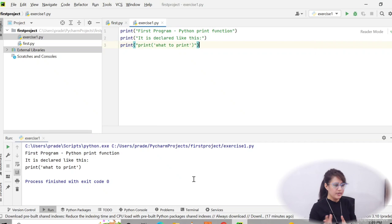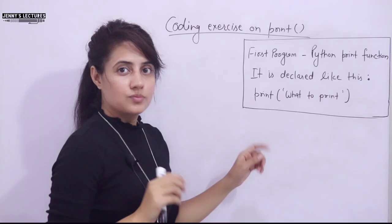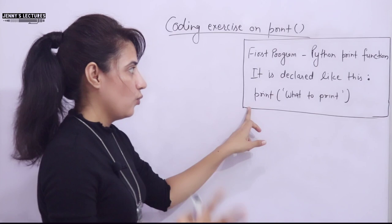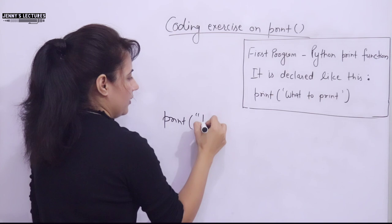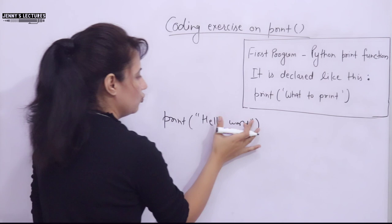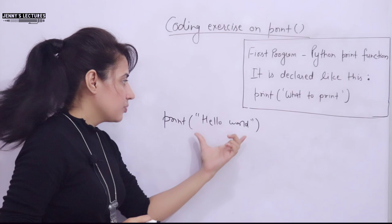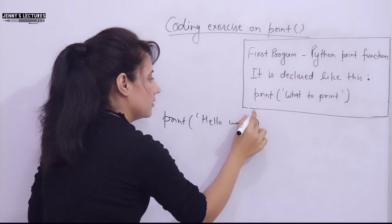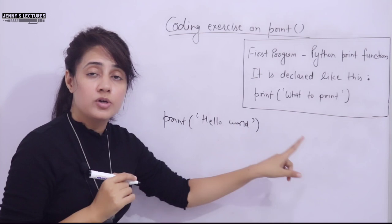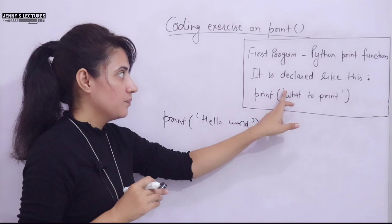Now let's discuss the print function. In the previous video I showed how to print 'Hello World' using double quotes. But in Python you can also write the string in single quotes — if you write single quote 'Hello World', it will also give you the output 'Hello World'. Double quote or single quote — both are correct, both work the same way in Python.